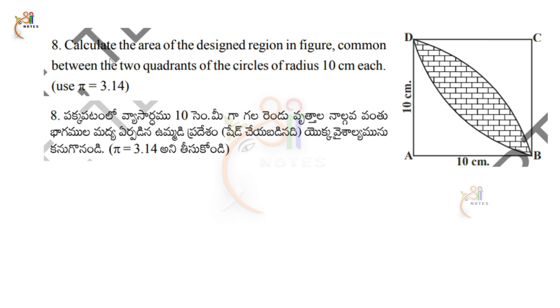Question number 8: Calculate the area of the design region common between the two quadrants of circles of radius 10 centimeters each. Use pi equal to 3.14.